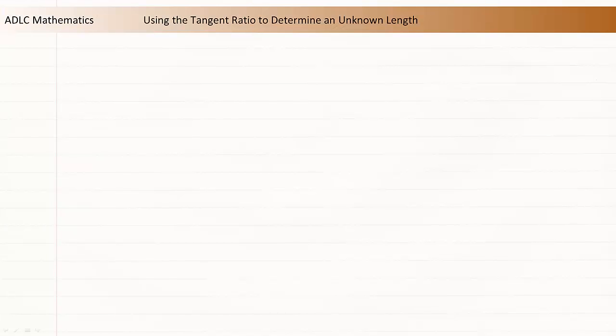The tangent ratio can also be used to determine the length of a short side of a right triangle if the other short side and an acute angle are known. Let's look at an example of determining an unknown side length.